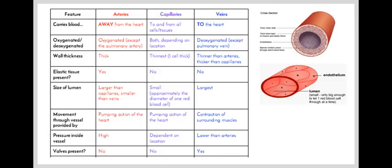They have the thinnest wall of the three different types of vessels, and they're actually only one cell thick. This allows for the easy diffusion of substances in and out of the capillaries and into the cells. There's no elastic tissue present and lumen is extremely small. As we can see from the diagram, it's only big enough to allow one red blood cell through at a time.